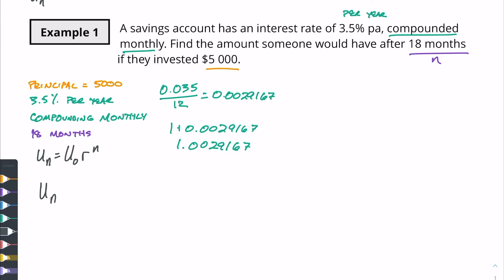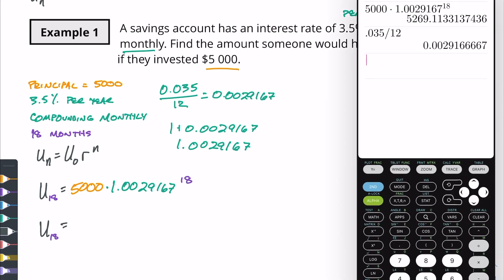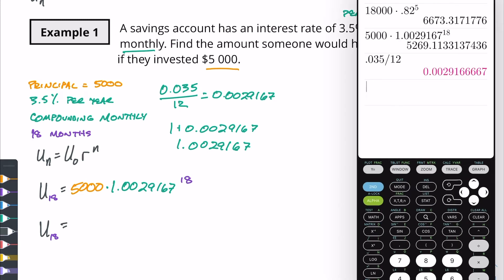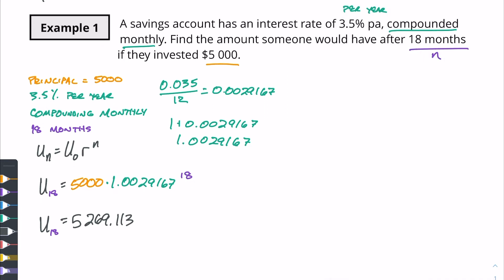So our final formula is going to be u of n equals 5,000 times 1.0029167 to the 18th power. So u of n, the amount after, actually u of 18 we should say. So the amount of u of 18 is going to be equal to 5,000 times, I've got it right up here, 5,269 dollars and 11 cents. But since we're talking about dollar amounts then really we're gonna round and we can say 5269.11. So there is our amount after 18 months.